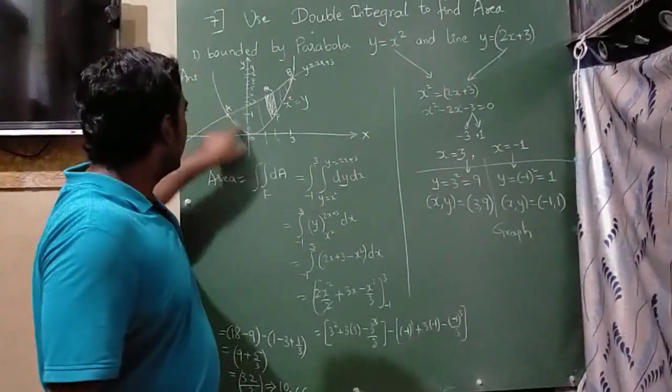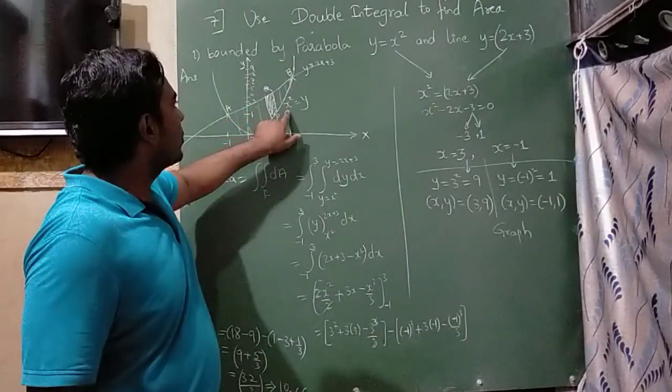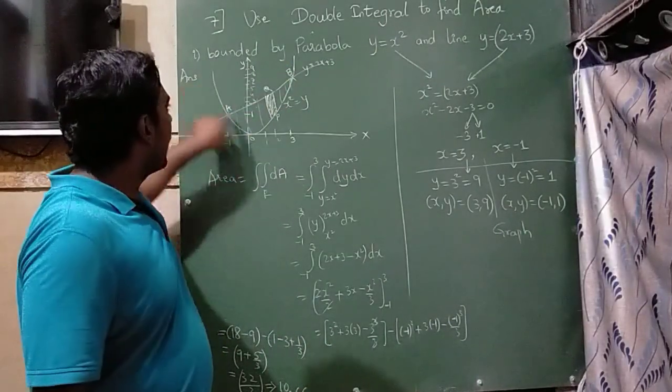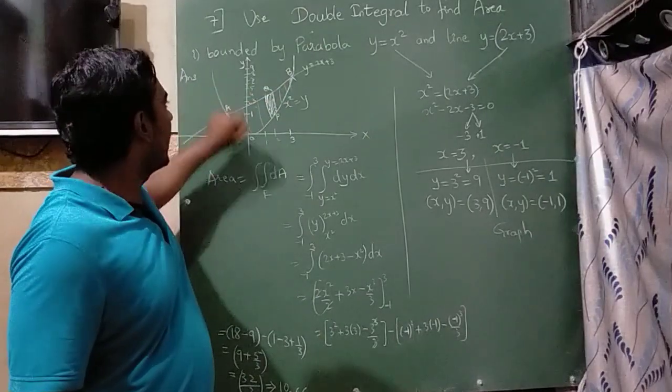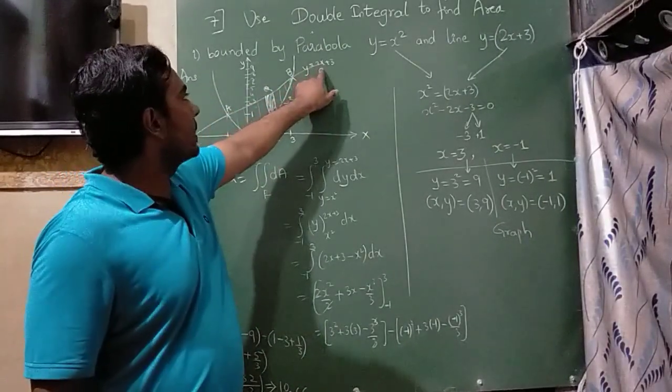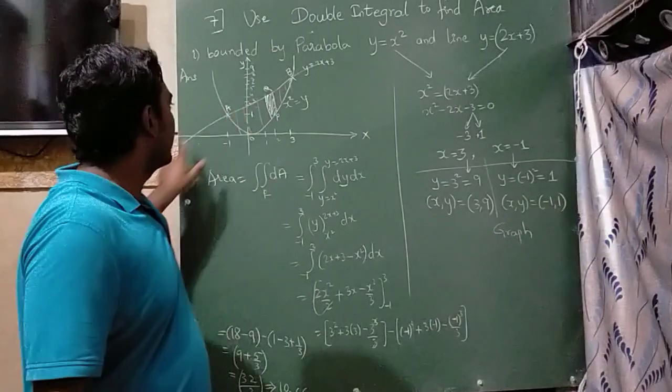Here what I have done is this I have written x square is equal to y, that is along y axis, parabola. And this line is y is equal to 2x plus 3.